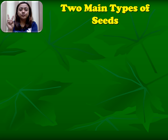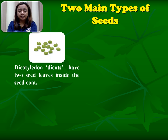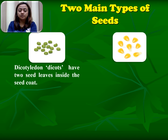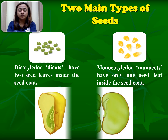There are two main types of seeds. Dicotyledon, or dicots, have two seed leaves inside the seed coat. Monocotyledon, or monocots, have only one leaf inside the seed coat.